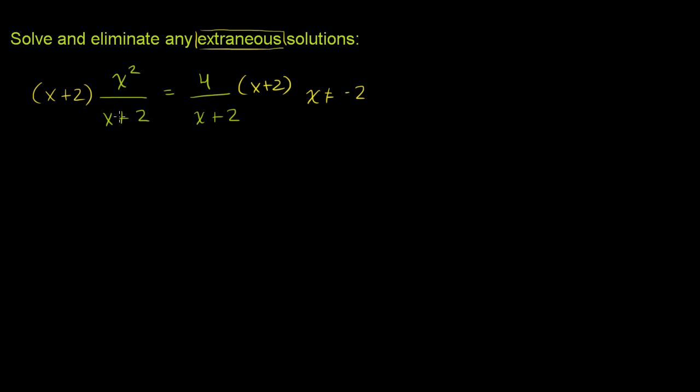x plus 2 divided by x plus 2 is just 1, and we can assume that x plus 2 isn't 0 so it's going to be defined. And so our equation has simplified to x squared is equal to 4.